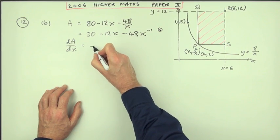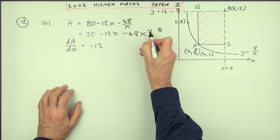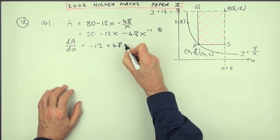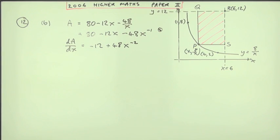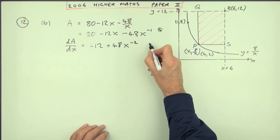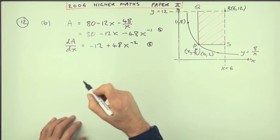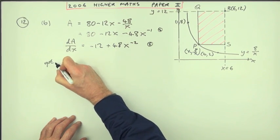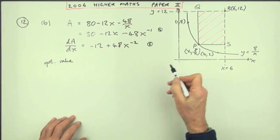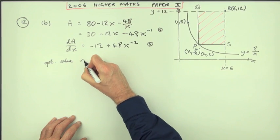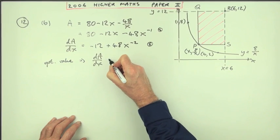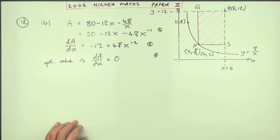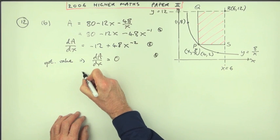So that'll become negative 12. Multiply by the power will make it negative 1 times negative 48 will be plus 48. Take 1 off the power—power negative 2. That's worth a mark. Then saying there'll be an optimum value or a stationary value—whichever you like, I tend to go for optimum value rather than stationary value when it's an optimum value equation, but it's really the same thing—means that dA by dx should equal 0. That's a mark just for equating the derivative to 0.